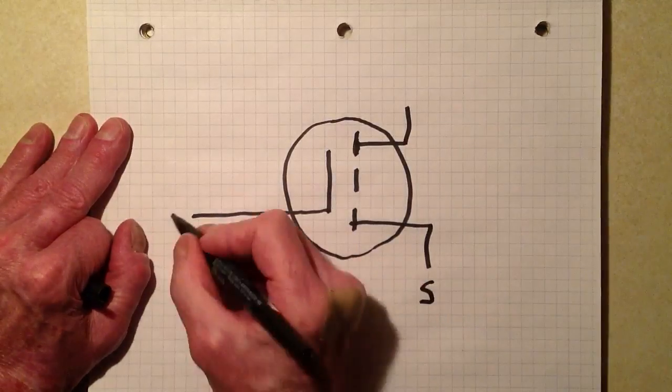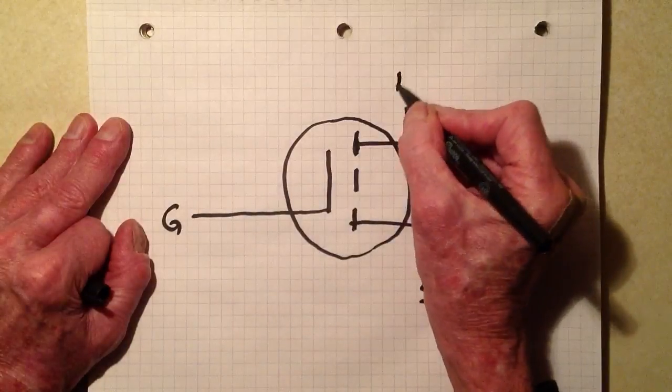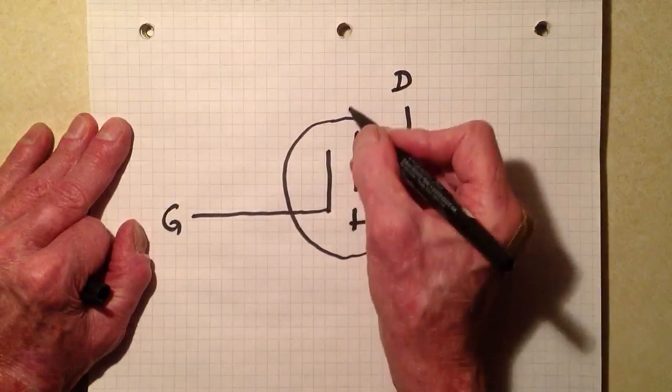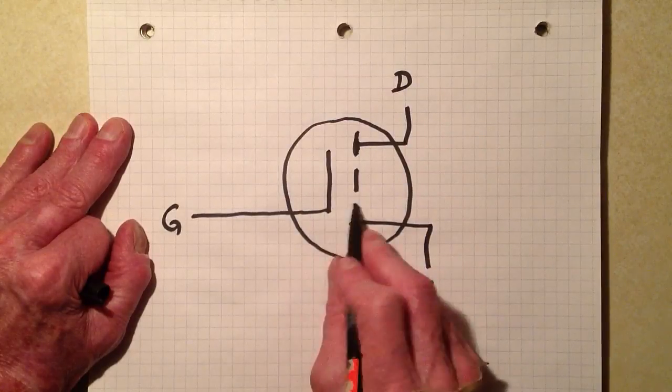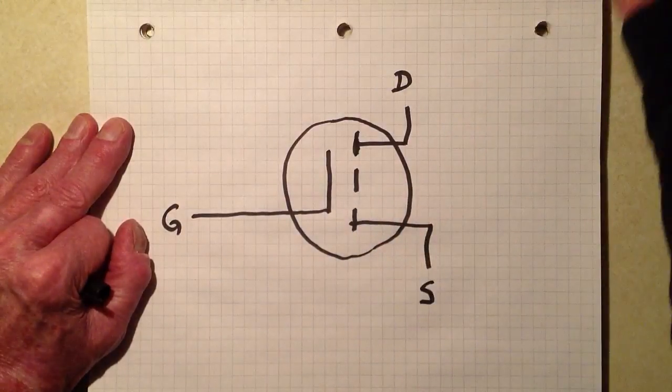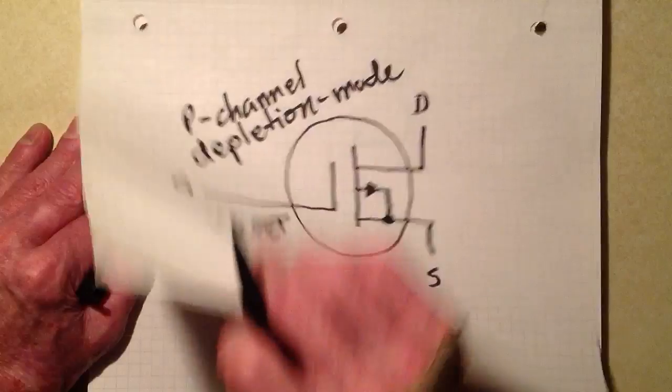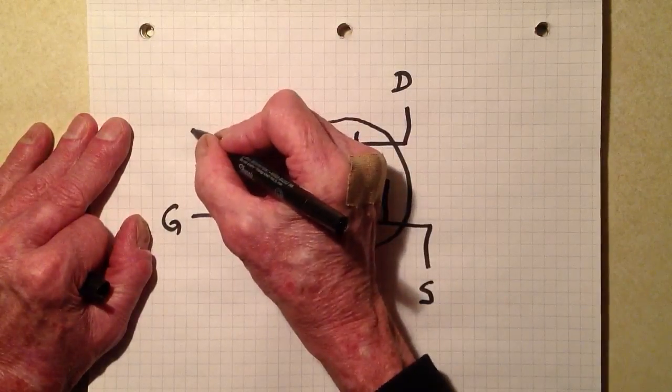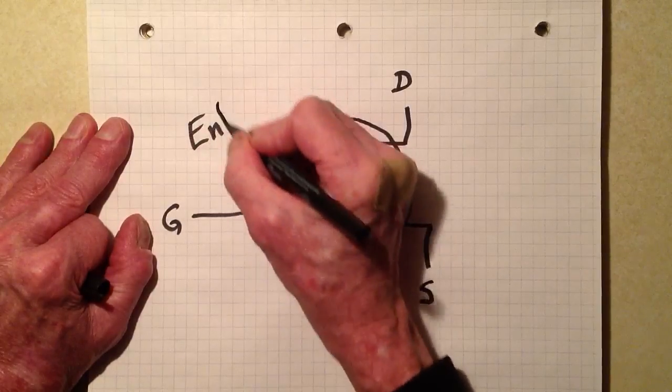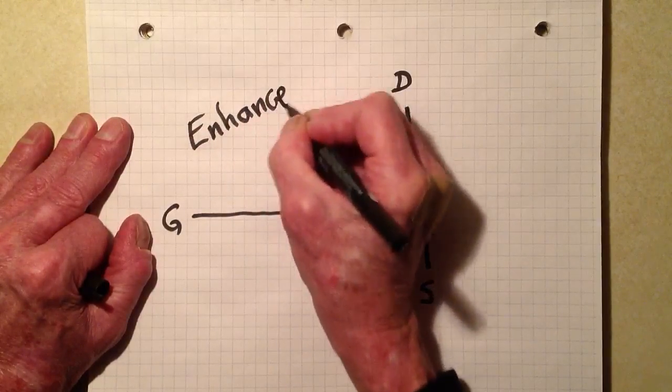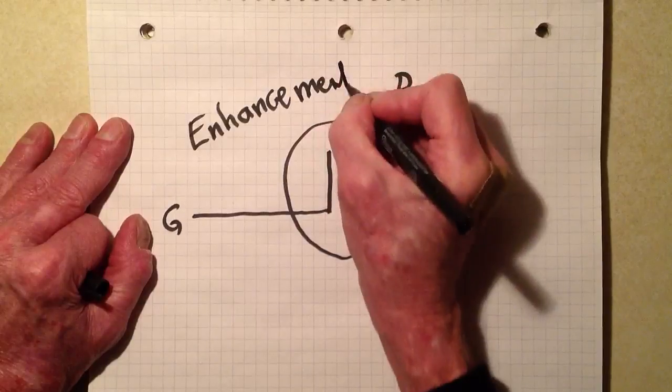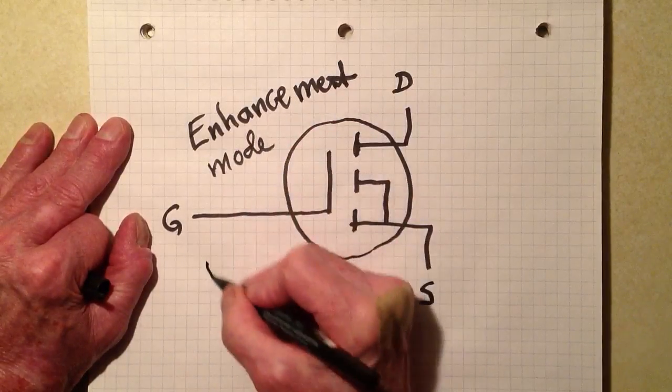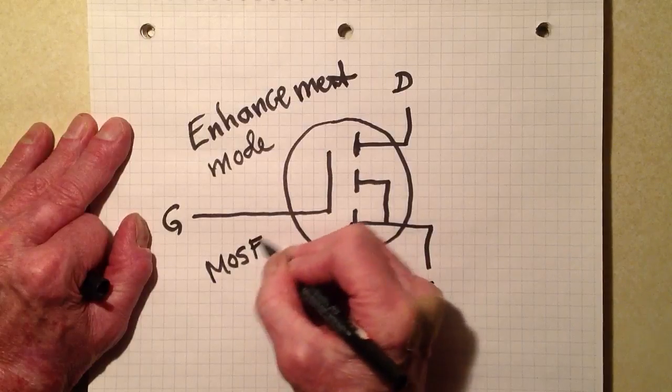Source, gate, drain. The metal oxide layer which is a dielectric layer that sort of looks like a capacitor. This little symbol, part of the symbol in here. Enhancement mode.